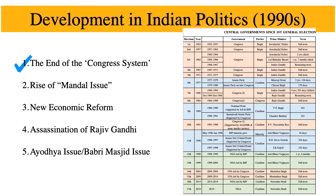The first and most crucial development of this period was the end of the Congress system. Looking at the election chart again, we can see that until 1977, Congress had been enjoying an absolute majority. However, in 1977, following the Emergency by Indira Gandhi, Congress lost the election and the Janata Party, a coalition, formed the government. Then Congress won again in 1980 and 1984.